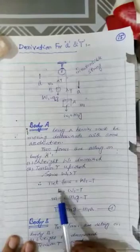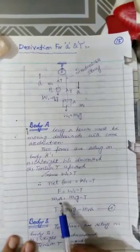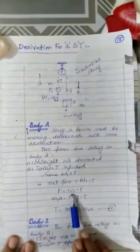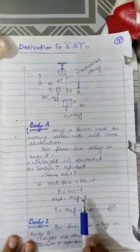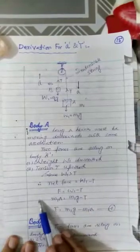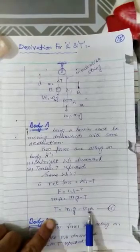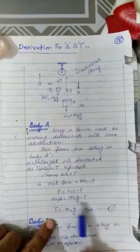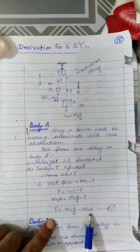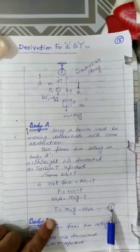According to Newton's second law, F is equal to MA. So we should write here M1A because we are discussing about mass M1. And W1 means M1G. Now if I shift this minus T from right to left side, it will become plus T. M1G as it is, shifting M1A from left to right, it will become minus M1A. This is your equation number one.